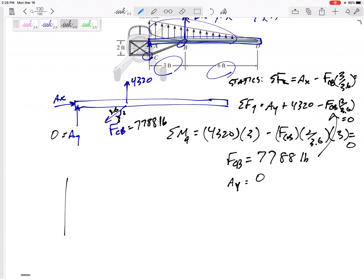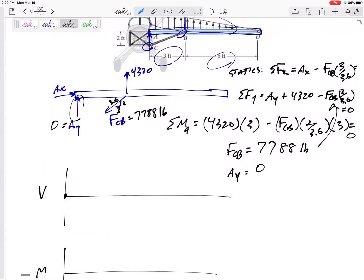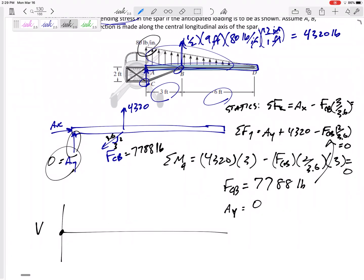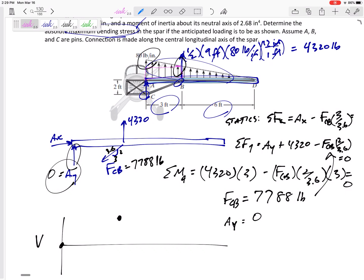So Ay is zero, FCB is 7788 pounds. Now we can draw the shear and moment diagram. The shear diagram immediately sees zero, so I hop on there at zero and I stay at zero. Then this distributed load is pushing it up pretty good and it's still pushing it up until it gets to here. What value did that go up? Well, it went up by this distributed load right here - that area would be 80.